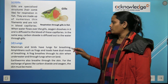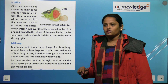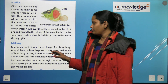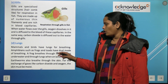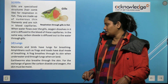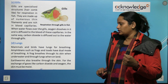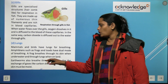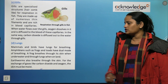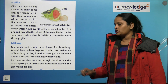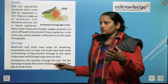Mammals and birds have lungs for breathing. Amphibians such as frogs and toads have a dual mode of breathing: a frog breathes through its skin when underwater, and through its lungs when on land. Earthworms also breathe through their skin. For the exchange of gases like carbon dioxide and oxygen, the skin must be moist so that the exchange can take place.